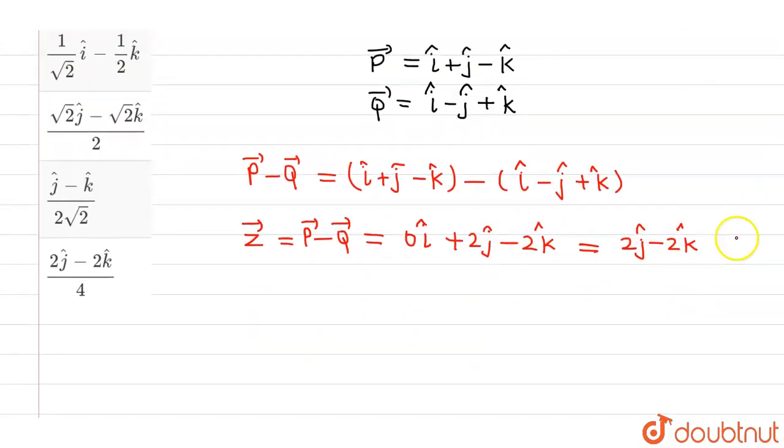So the unit vector in the direction of Z vector will be denoted by z cap, and this equals the vector divided by its magnitude.